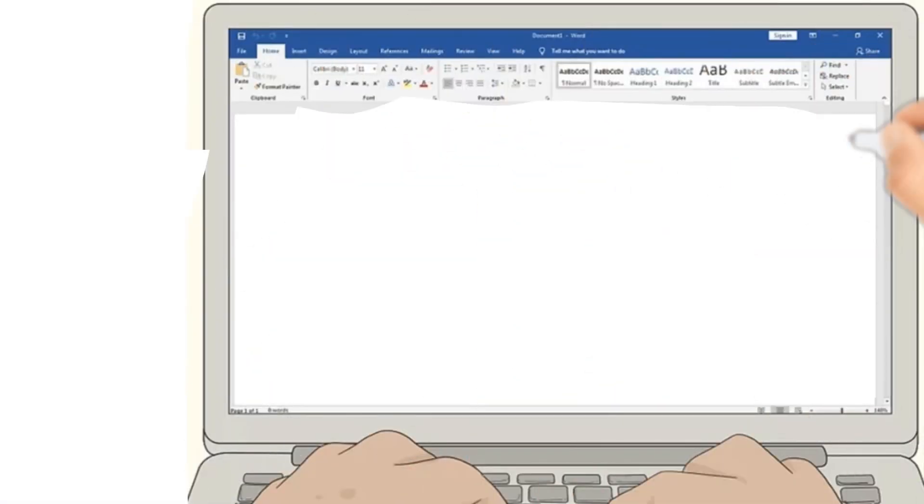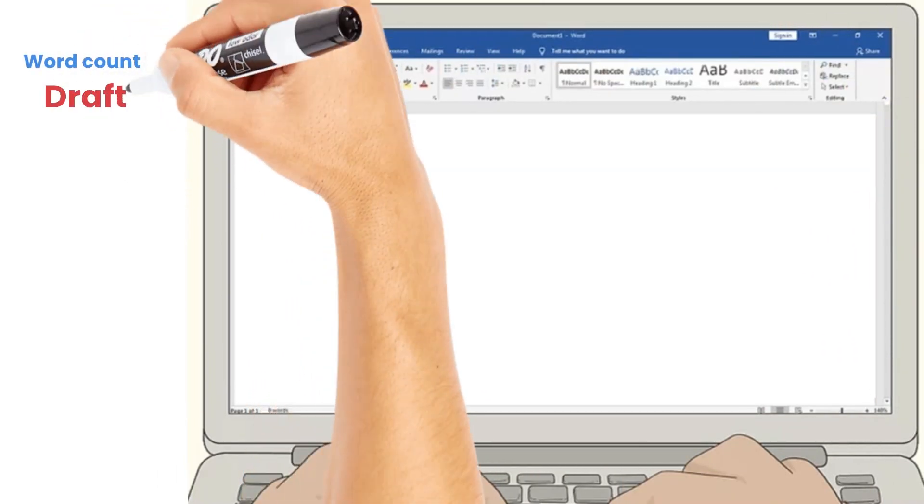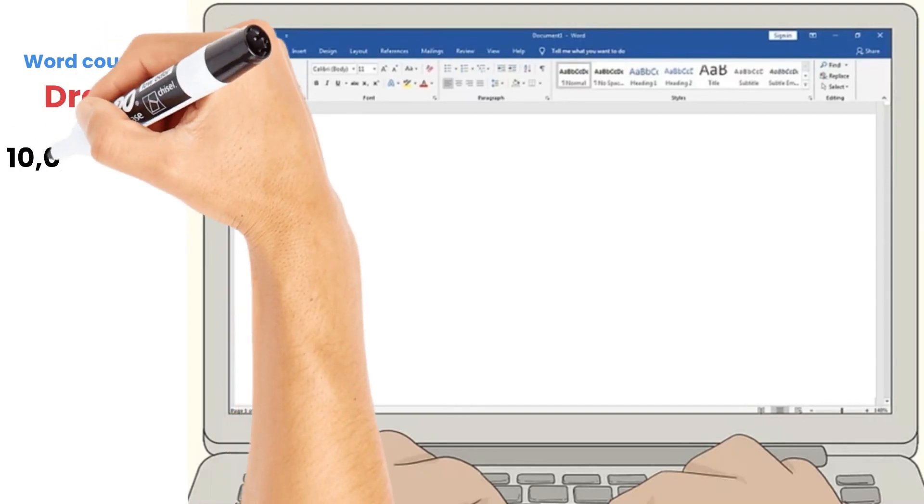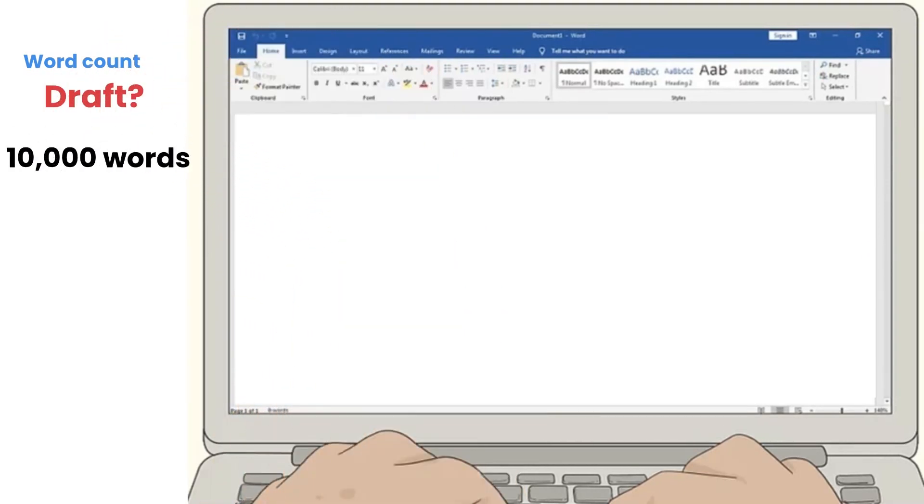I think you must be looking for the answer that how much a proposal draft should be. In different fields or disciplines, there are different requirements to format proposal. However, in social sciences, commonly an ideal proposal should be of 10,000 maximum number of words.